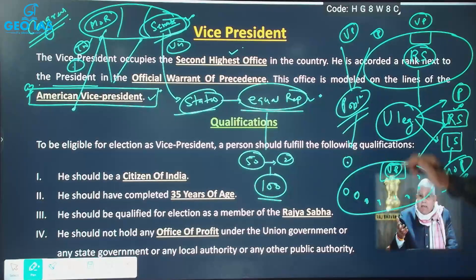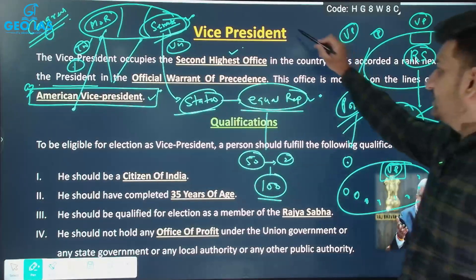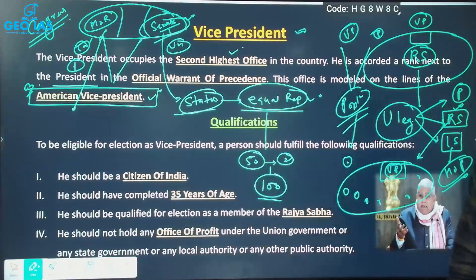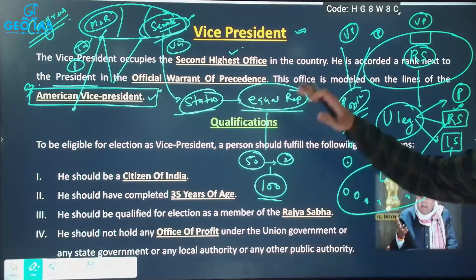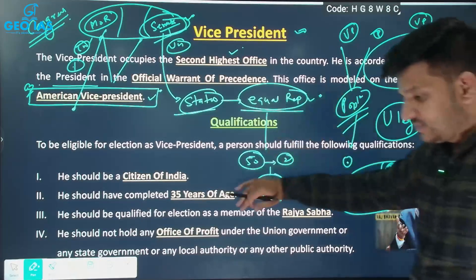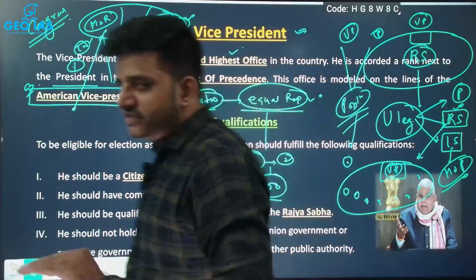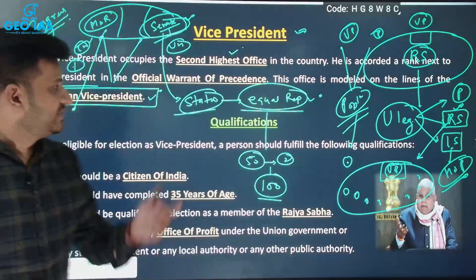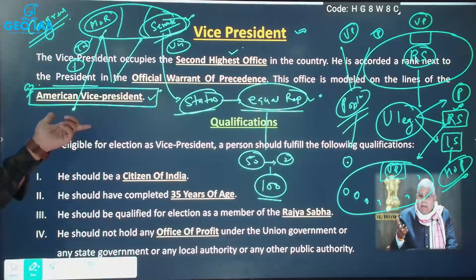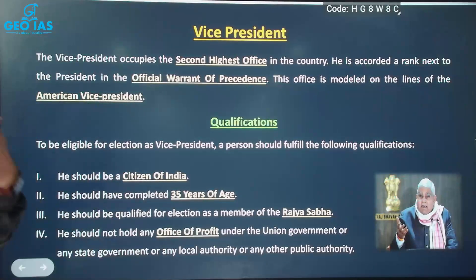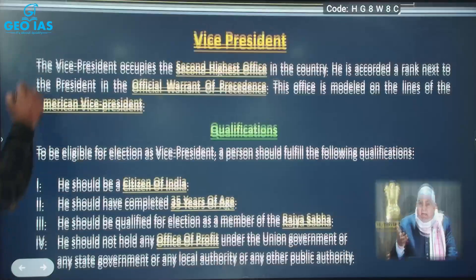The difference between the Senate and the Rajya Sabha is clear, but the concept that the Vice President becomes the ex-officio Chairman of the upper house is almost the same in both systems. This concept is inspired from the American Vice Presidential office — that is what we must keep in mind.